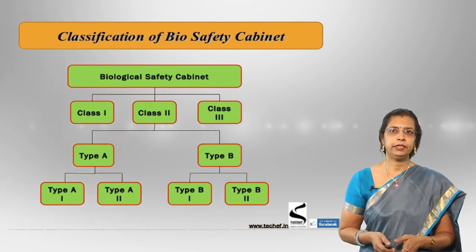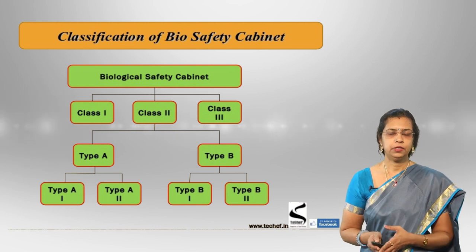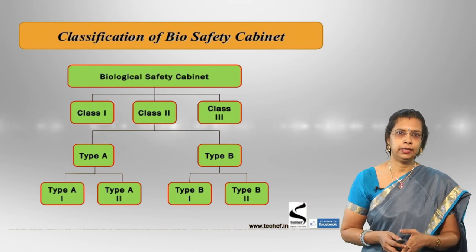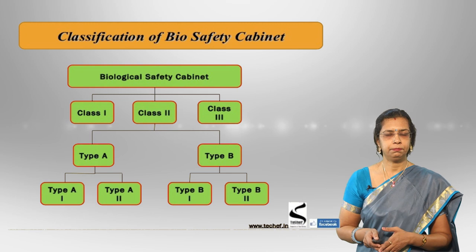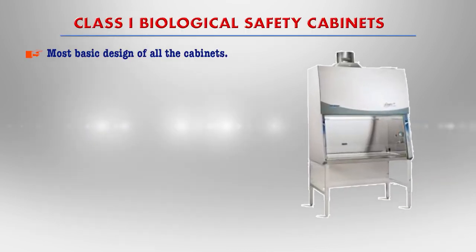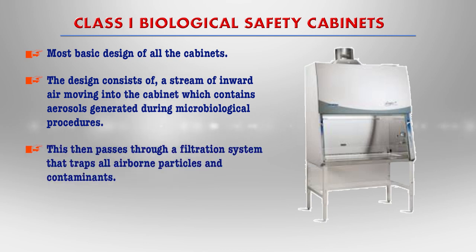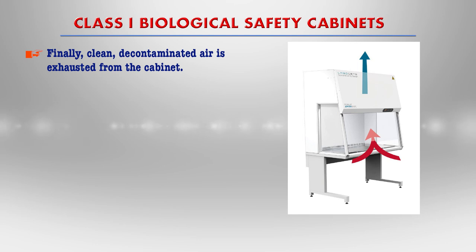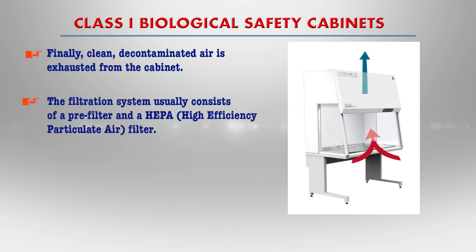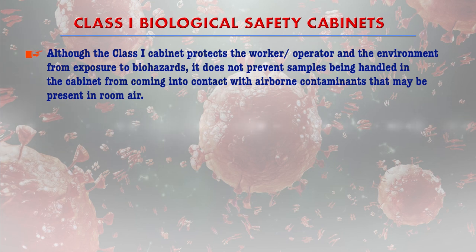In the classification, class 2 has type A and type B; type A has A1 and A2, and type B has B1 and B2. Class 1 biological safety cabinets are found in most laboratories and represent the most basic design. They consist of a stream of inward air moving into the cabinet, containing aerosols generated during microbiological procedures. This air passes through a filtration system that traps all airborne particles and contaminants, and clean decontaminated air is exhausted from the cabinet. The filtration system consists of a pre-filter and a HEPA — High Efficiency Particulate Air — filter.